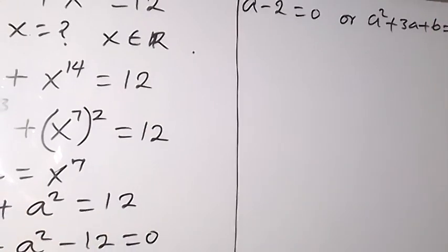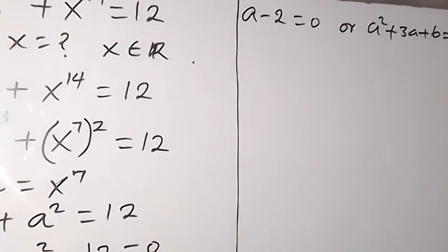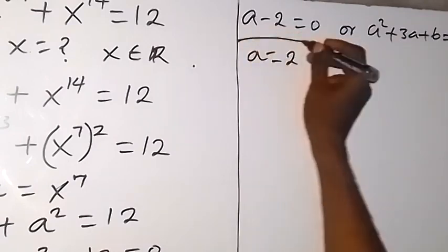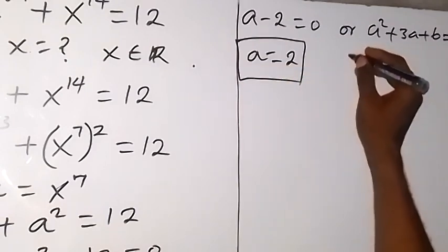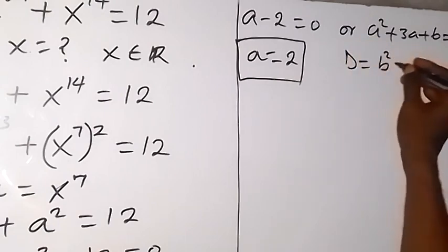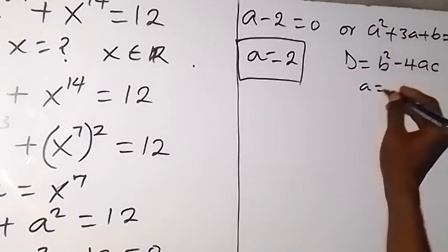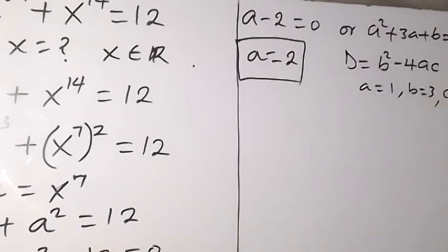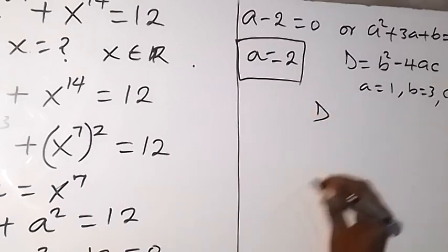Solving the first, we take minus 2 to the other side and a equals 2. For the second factor, let's check whether we get a real solution. The discriminant is b squared minus 4ac. In this case a is 1, b is 3, and c is 6, so the discriminant is 3 squared minus 4 times 1 times 6.